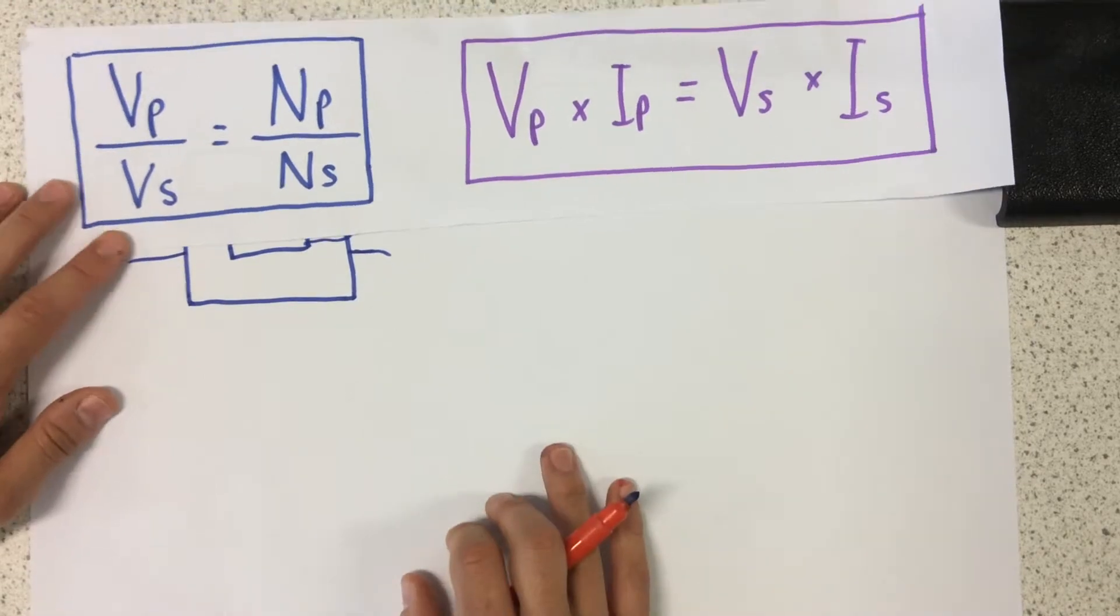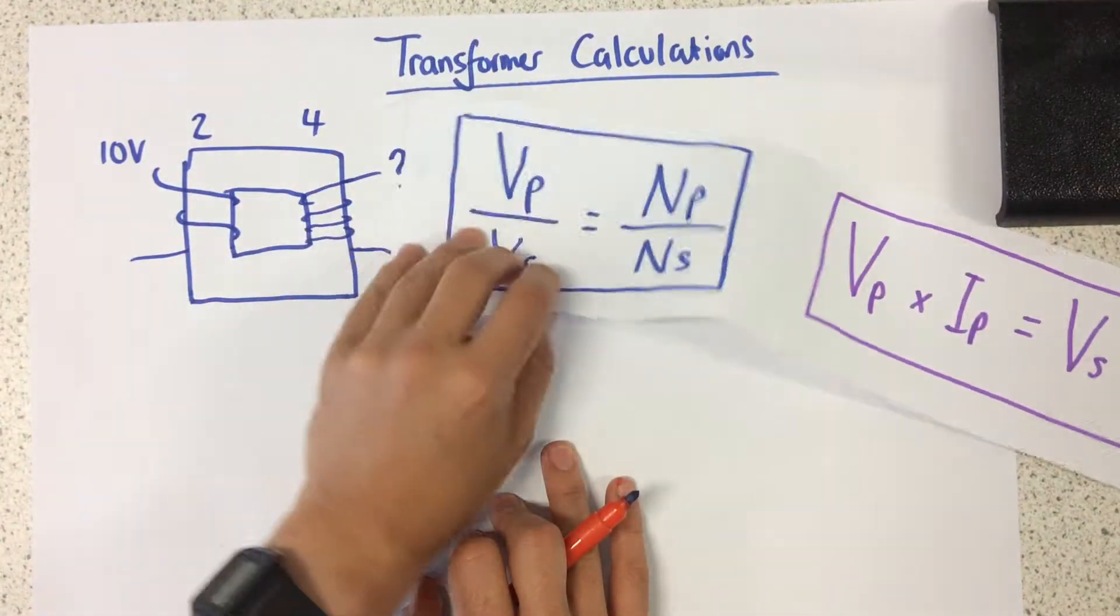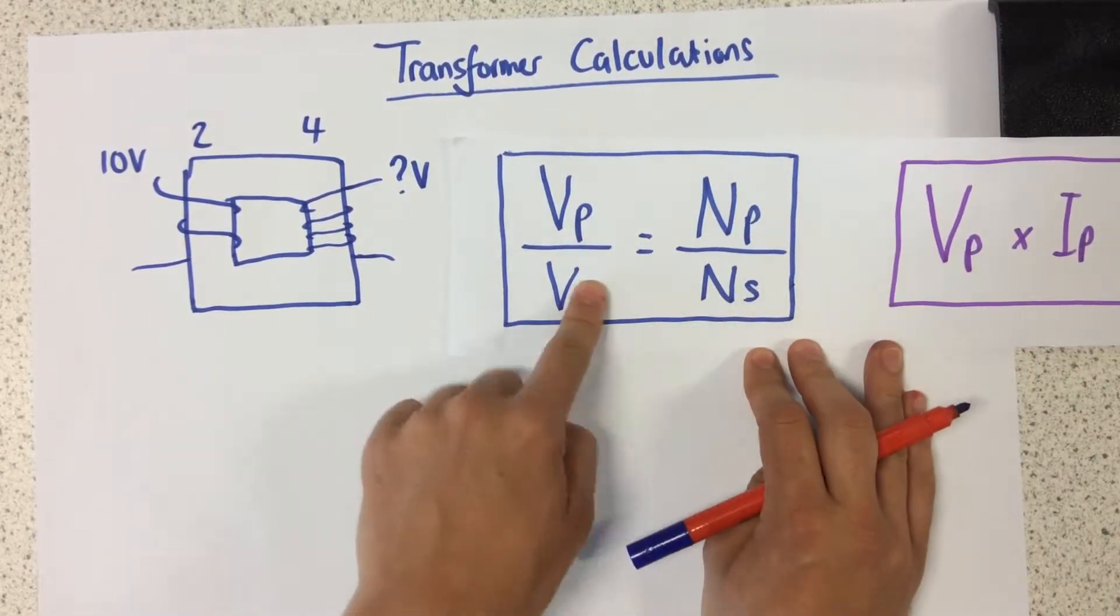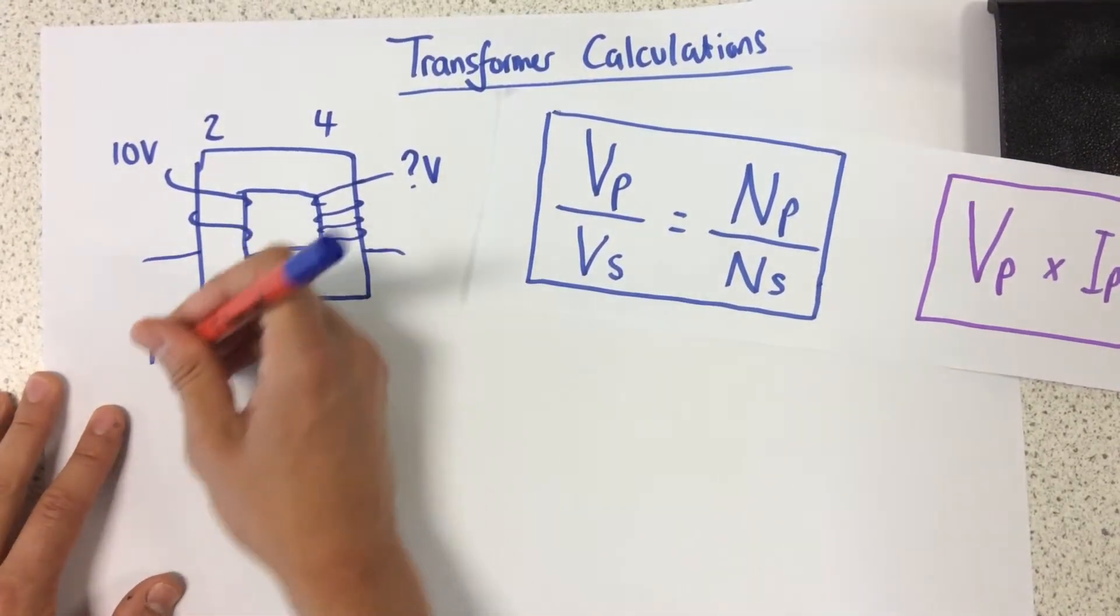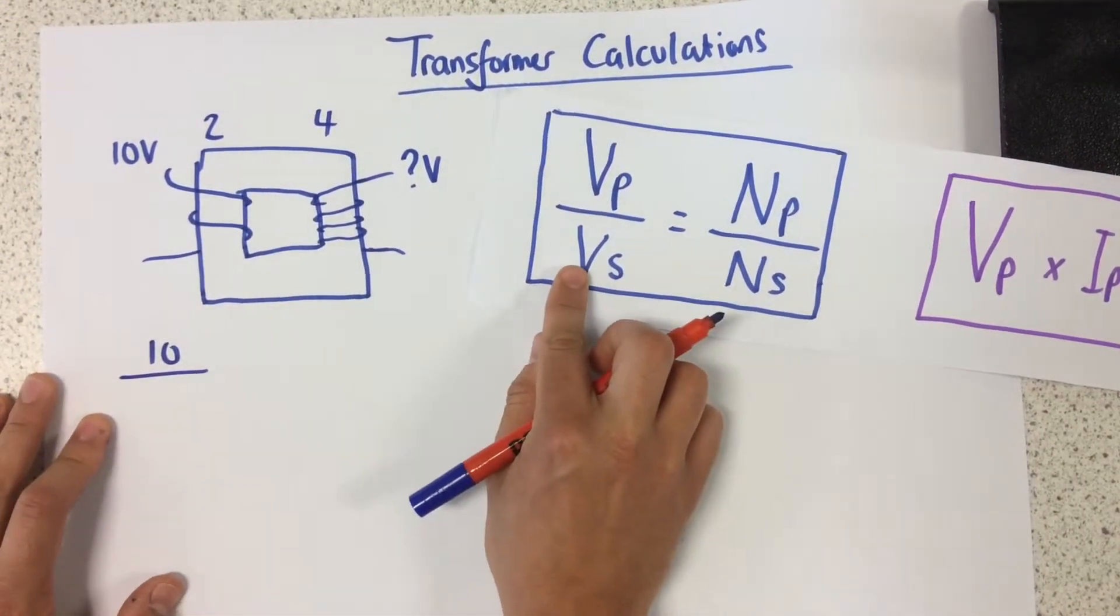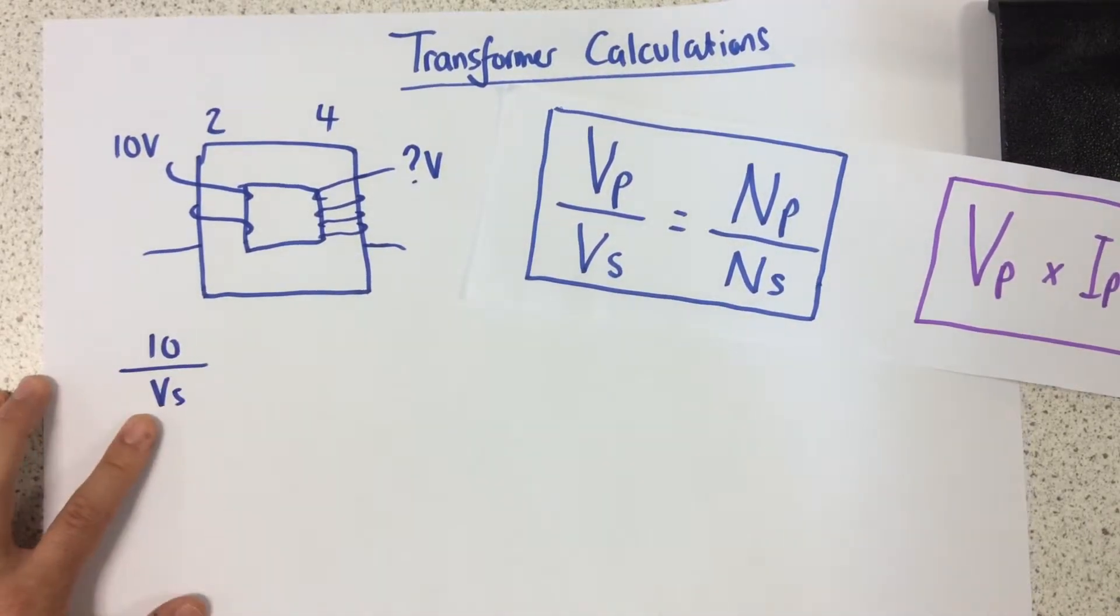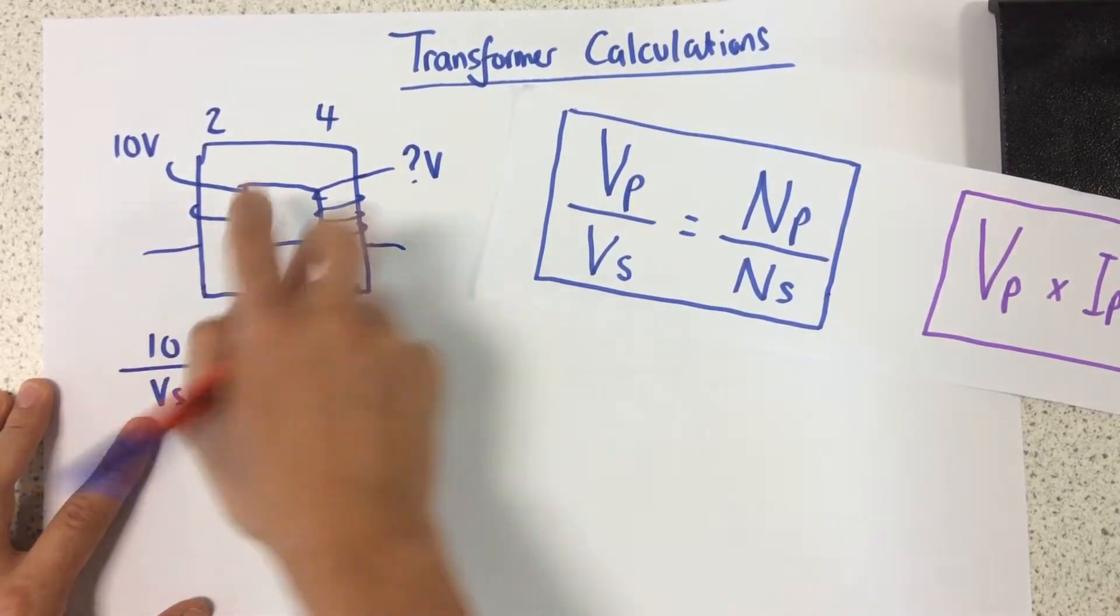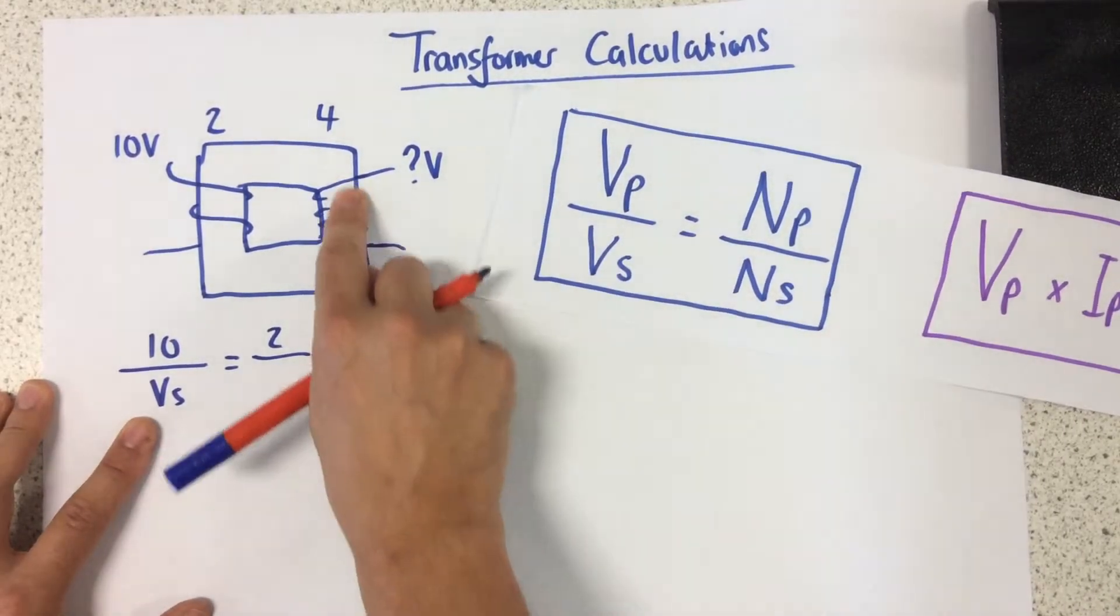So the first thing I'm going to do, with these transformer equations, I normally find it easier to put the numbers in first, so substitute first before rearranging. So voltage at the primary is 10 divided by voltage at the secondary, which is what I don't know, so I'm going to keep it as that, equals number of turns at the primary, so there's two turns at the primary, divided by my number of turns on the secondary, which is four.